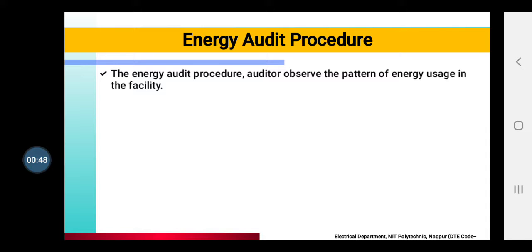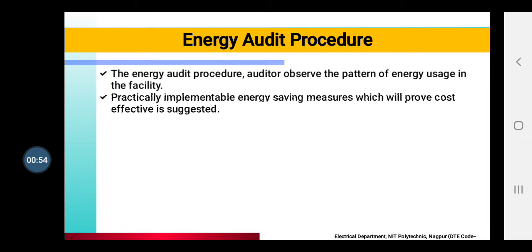The audit observes the pattern in which energy is being used. Practically, whatever Energy Saving Measures we use, they are low-cost. So the first task of the Energy Auditor is to check, wherever they are inspecting, the pattern of energy usage — how that energy is being used.